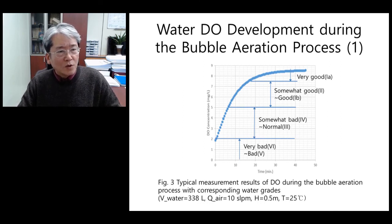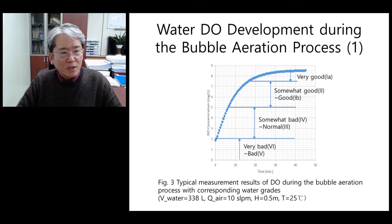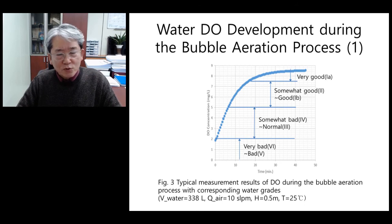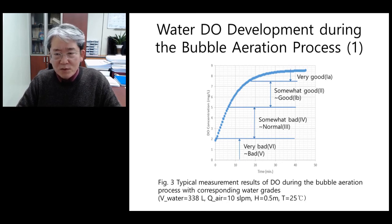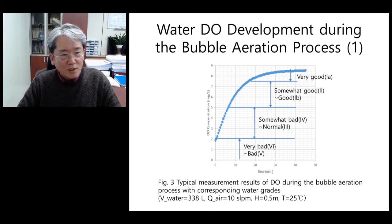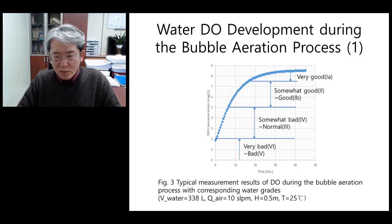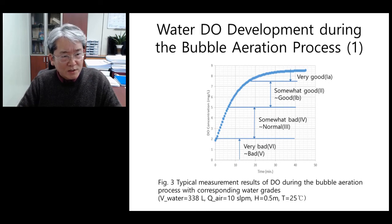We present the test results of measured water DO as the bubbling aeration proceeds at a predetermined mass flow rate. We have chosen two test condition parameters: one is the air mass flow rate in terms of standard liters per minute applied through the bubblers, and another is the depth of the bubblers. For flow rates, 10, 20, and 30 sLPM are selected, and bubbling depths of 0.4 m and 0.8 m are also selected.